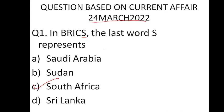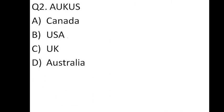The next question is about AUKUS. The options are Canada, USA, UK, and Australia. If you see, USA, UK, and Australia are members of this group AUKUS. So the correct option is A — Canada is not a member of AUKUS.